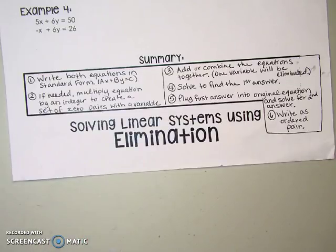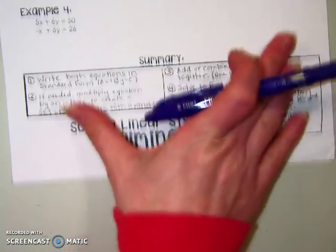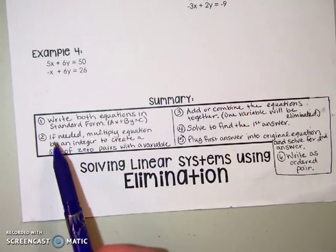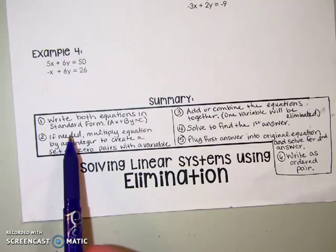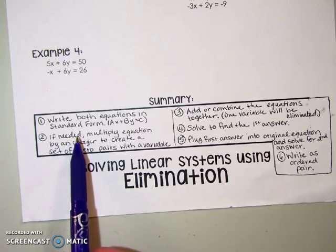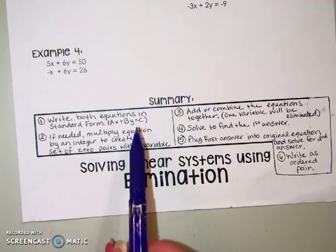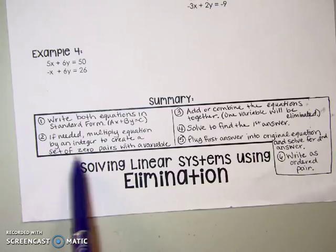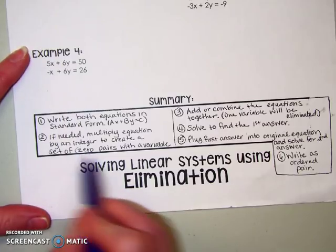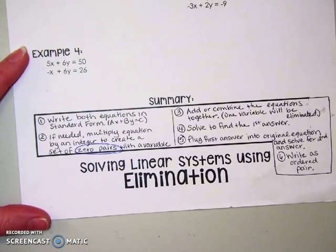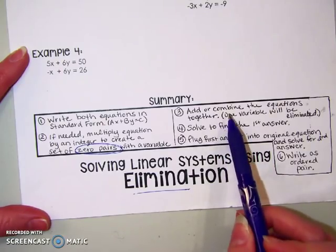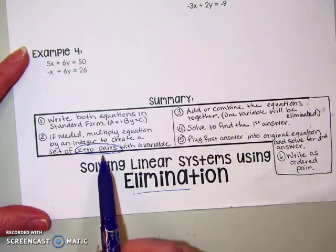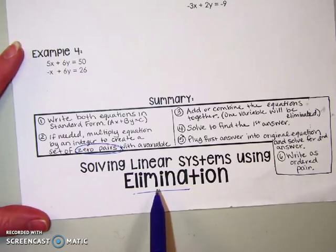Elimination is an algebraic method to solving systems. Let's look at the steps. First, both equations need to be written in standard form, or they both need to be written in the same format — standard form is usually how you see them. Step two, if needed, multiply an equation to create a zero pair. This method is all about using a zero pair to eliminate one of the variables. Then we're going to add or combine the equations together, which the zero pair would then eliminate a variable, and that's how we find our first answer.